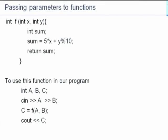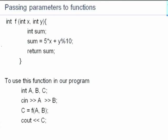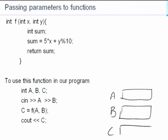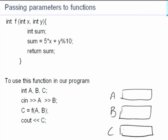Very quickly to recap parameter passing: parameters are passed by value. If I have defined a function f with two parameters x and y, evaluating some value sum = 5*x + y modulo 10, and I return one value. In the actual program I may write int abc. When executed, I have values of a and b, and a location for c. Let's assume these values are 12 and 7.